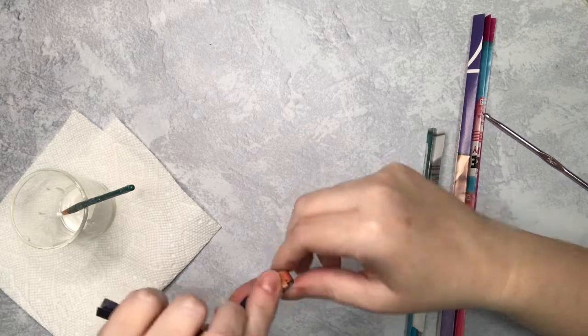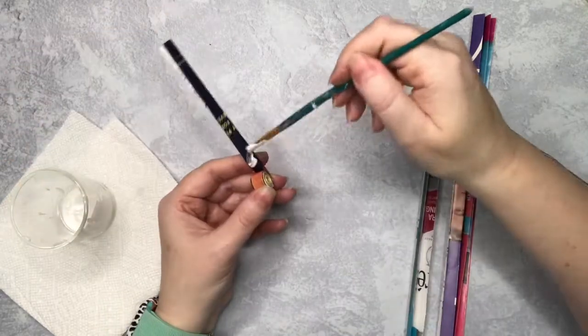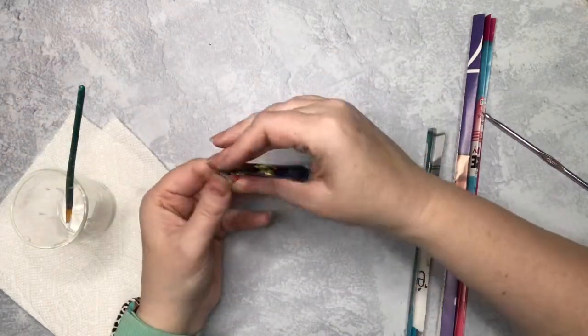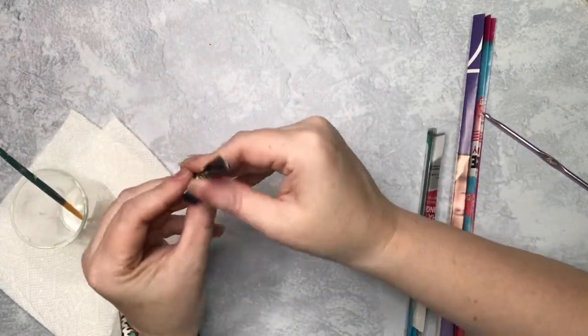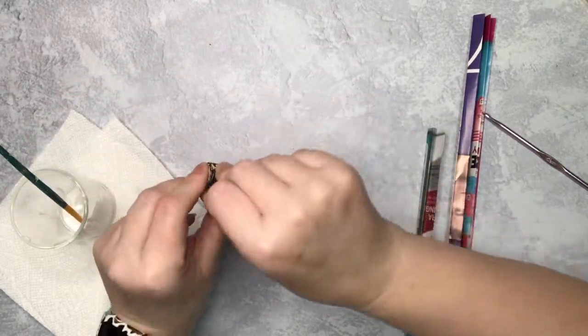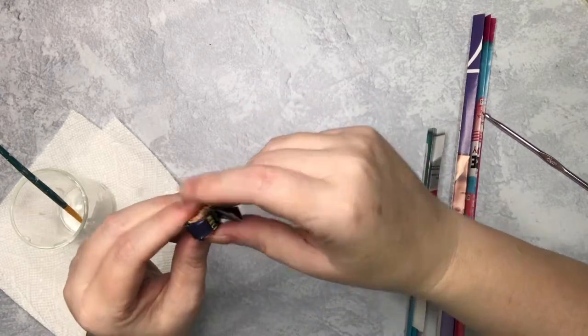We're just going to repeat this process now for the remaining four strips, checking the tension and the evenness of the circle as we go along. I mean, it's paper, it has no memory, it's a really forgiving structure, so you can use your fingers to squeeze and adjust where necessary.